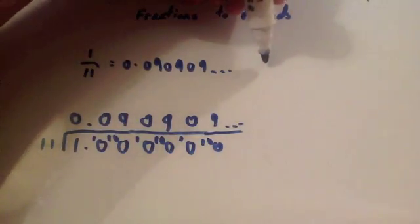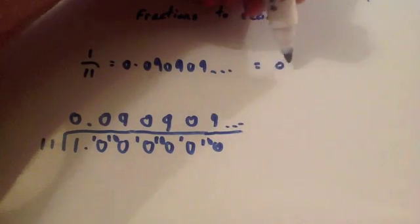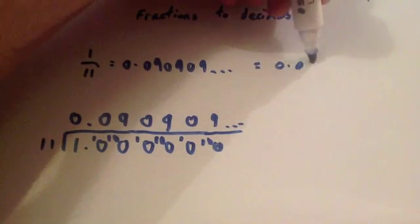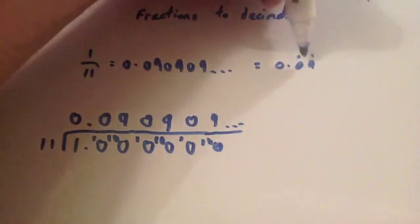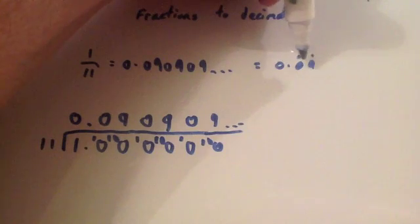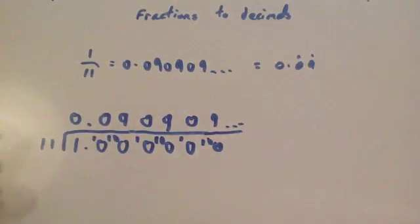I would do, it's equal to 0.09. And I would put a dot above the 0 and the dot above the 9 to show that that recurs. So, it goes 0.09, 0.09, 0.09, 0.09 and so on and that's it.